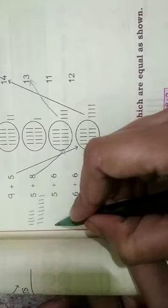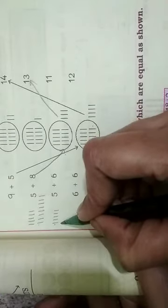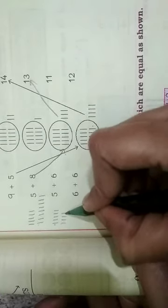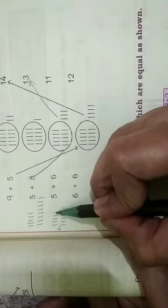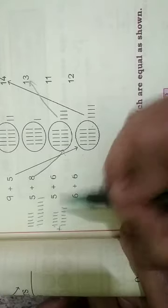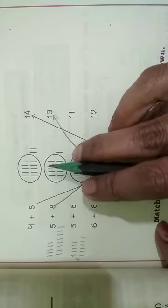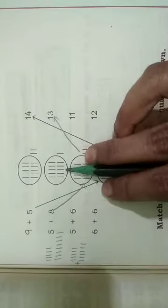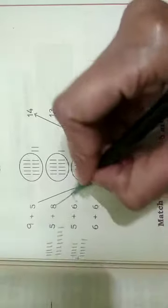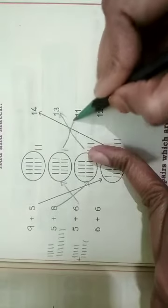Next, 5 plus 6. First we draw 5 lines — 1, 2, 3, 4, 5 — then 6 lines — 1, 2, 3, 4, 5, 6. Now we count all together: 1 through 11. The answer is given in split form — 11 means 1 group of 10s and 1 unit. That's why we match here and the answer 11 is here.